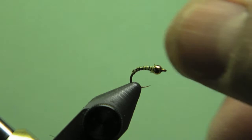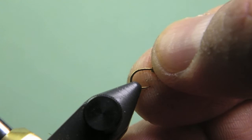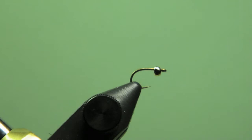I'm going to slip it in the vise. This is a Tiemco 2499 SPBL. You can kind of look at that hook and it has a nice wide gape, a little bit different from a 2488.